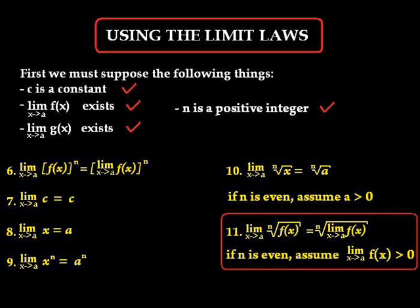Eleven: the limit as x approaches a of the nth root of the function f of x is equal to the nth root of the limit as x approaches a of f of x. If n is even, we assume that the limit as x approaches a of f of x is greater than zero.